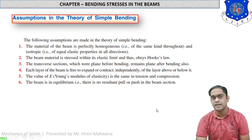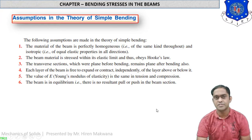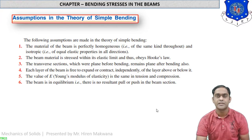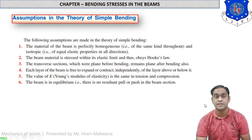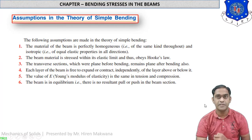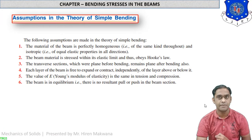These six are the assumptions in the theory of simple bending. These assumptions may be asked in your exam for 2 to 3 marks. Let us now derive the main equation of bending stress, that is sigma B.